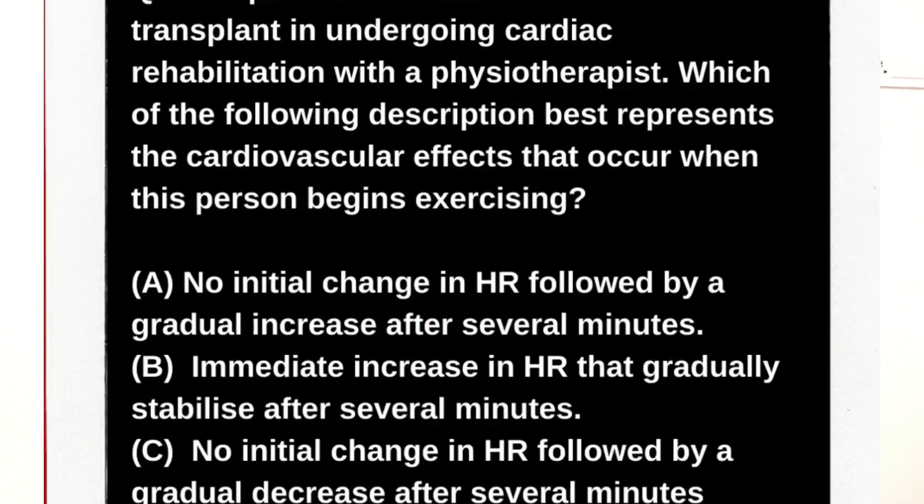When a heart transplant patient initiates exercise in cardiac rehabilitation, the normal anticipatory response is absent. In healthy individuals, the somatic nervous system signals the heart before exercise begins, causing heart rate to rise in anticipation. But since the nerve supply is not intact in a transplanted heart, that anticipatory reaction does not occur. So initially there will be no change in heart rate, and then slowly and gradually, as exercise continues, heart rate will increase in response to the workload. Therefore, option A — no initial change in heart rate followed by a gradual increase after several minutes — is the correct answer.